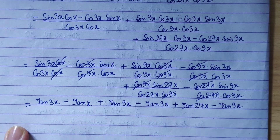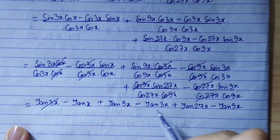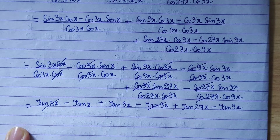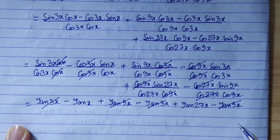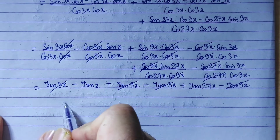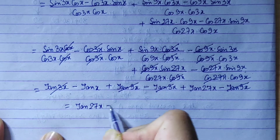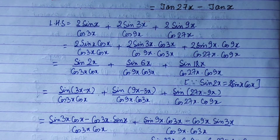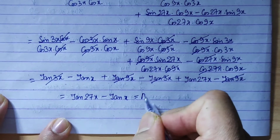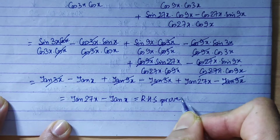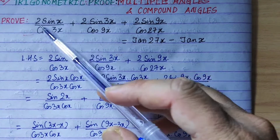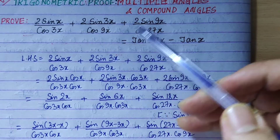Finally, after all the tan terms cancel telescopically, we get tan27x minus tanx, which equals tan27x minus tanx. Hence proved.